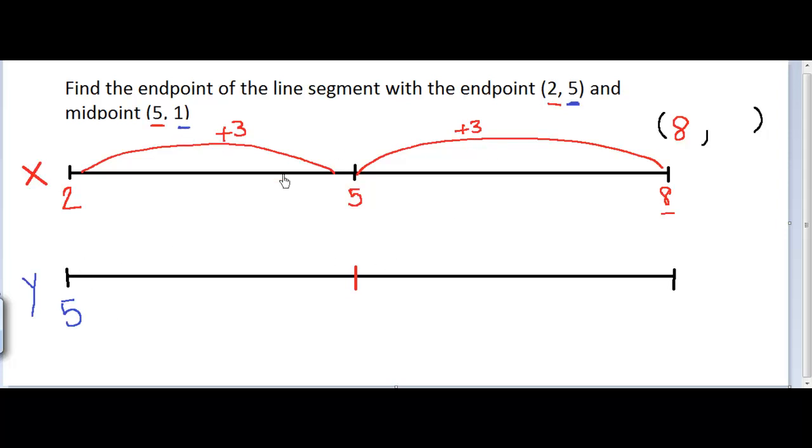And I want to keep in mind that these are not traditional number lines. I'm just using these so you can see what we're doing. So how did we go from 5 to 1? That's negative 4 units. And so we're going to do the same thing again to go from 1 to the next number. And that would have us placed at negative 3.